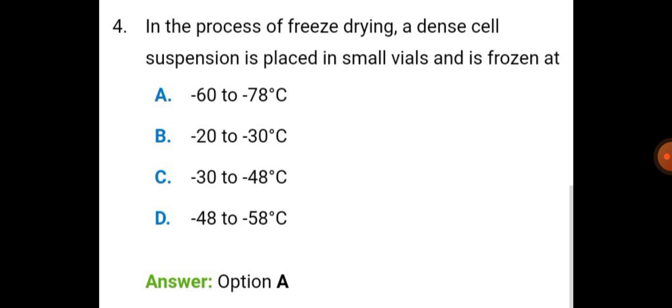In the process of freeze drying, a dense cell suspension is placed in small vials and is frozen at minus 60 to minus 78 degrees Celsius.